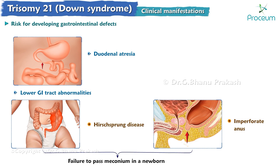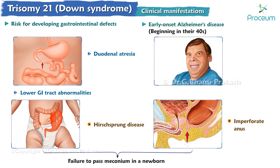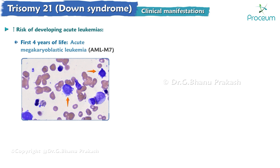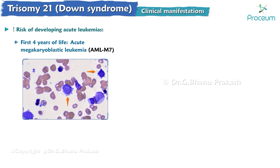Patients with Down syndrome are at risk for developing early-onset Alzheimer's disease, often beginning in their 40s. They are also at increased risk of developing acute leukemias. In particular, in the first four years of life, they are predisposed to acute megakaryoblastic leukemia, AML-M7.